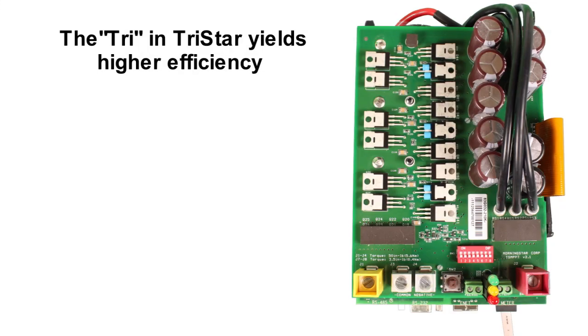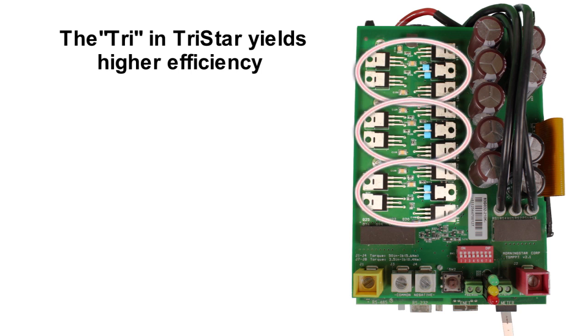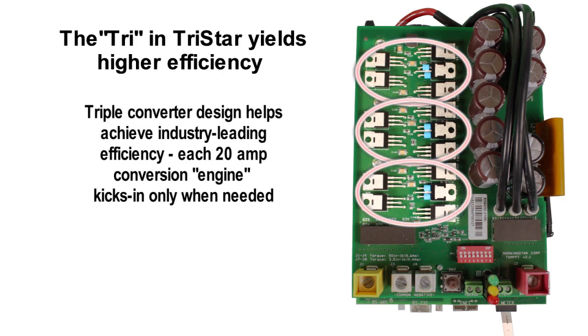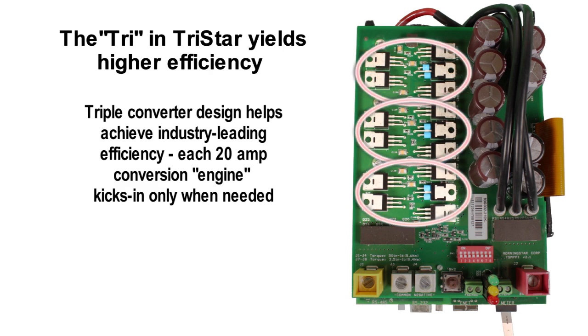The MOSFET power devices do the heavy lifting in a charge controller. We mentioned that there are three sections to a TriStar. Well, there are also effectively three charge controller phases as well. You can see three clusters of devices on the board. With three converters in parallel, the 60-amp TriStar effectively has three 20-amp conversion engines on board and can bring up additional charging horsepower as needed or shut down the other charging phases when they aren't.